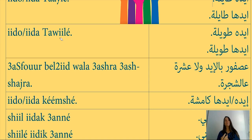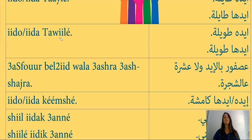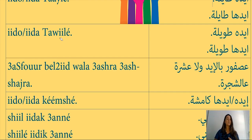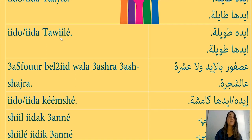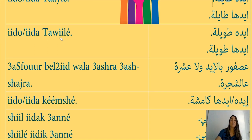Eidoh ta'ile or eidha ta'ile can also mean that a person is a thief. When you say somebody's hand is long, it means they steal things. In Arabic, long and tall are the same word: ta'ile masculine, ta'ile feminine.